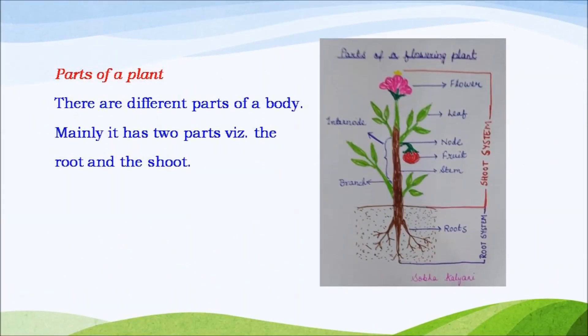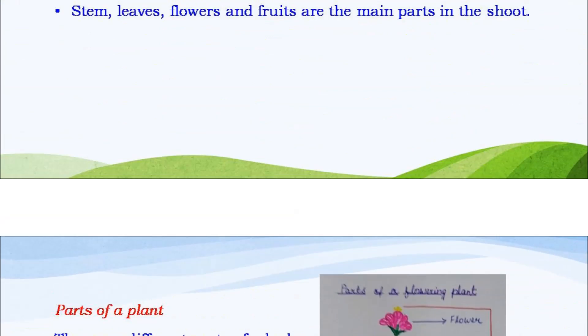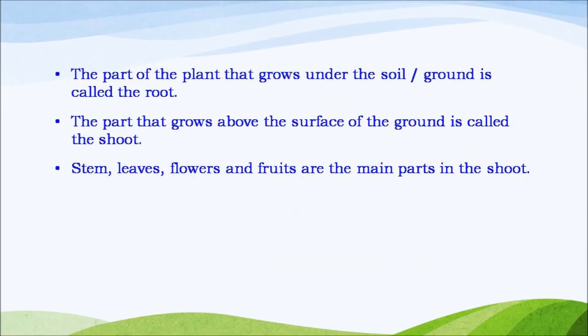Parts of a plant. The plant's body is made up of different parts. Mainly it has two parts, namely the root and the shoot. The part of the plant that grows under the ground is called the root, and the part that grows above the ground is called the shoot.